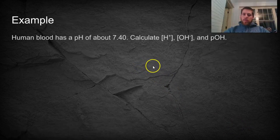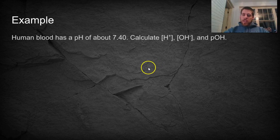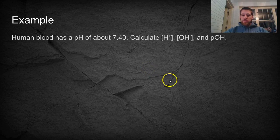Let's look at one example. The pH of your blood is roughly 7.4. Calculate the H concentration, the OH concentration, and the pOH. Go ahead and pause the video and do that real quick.